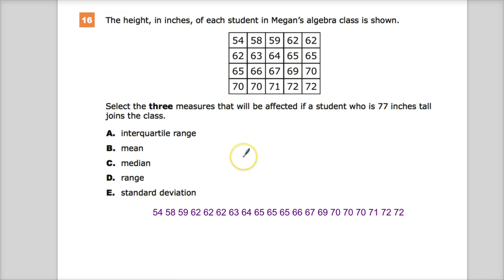Now select the three measures that will be affected if a student who is 77 inches tall joins the class. So we've got interquartile range, which would be the distance or the difference between the value for the third quartile Q3 and quarter one Q1. Then the mean, which would be the average value. Median would be the middle value. Range, of course, would be how far apart they are. And standard deviation. Eventually we'll deal with this student who is 77 inches tall, taller than anyone else in the class. But first I want to do a quick analysis of some of these to get a feel for where all this stuff is located.